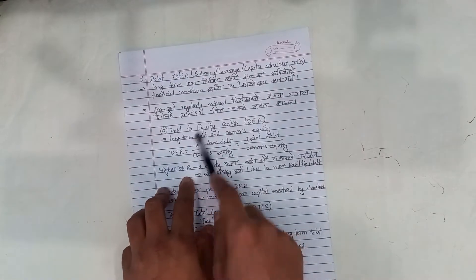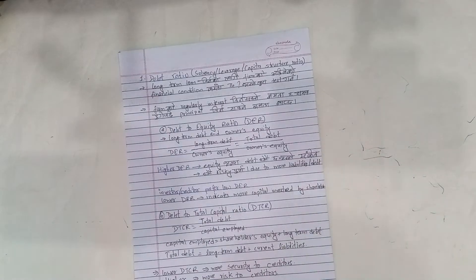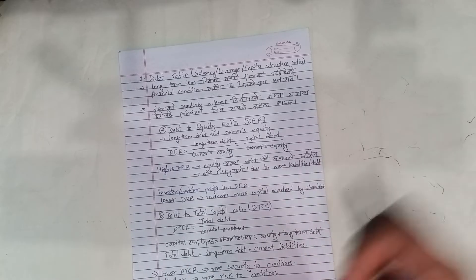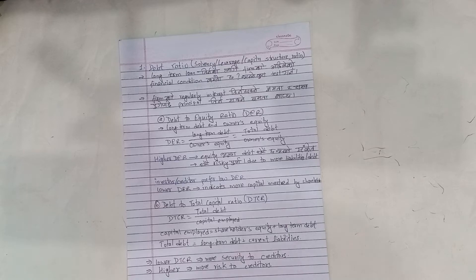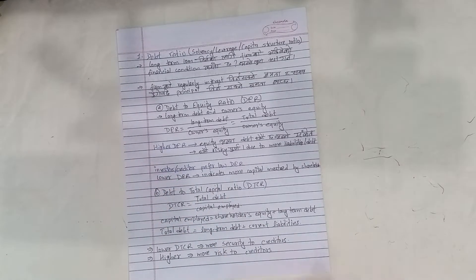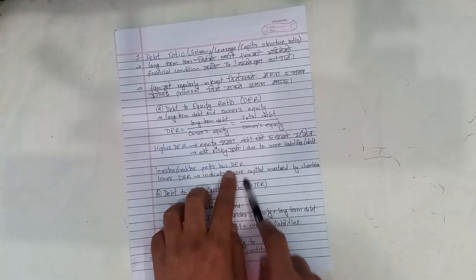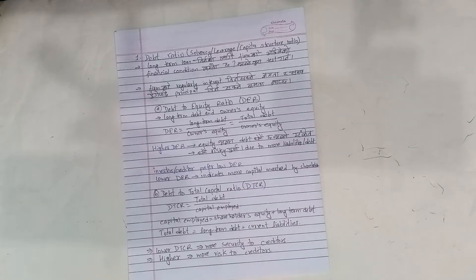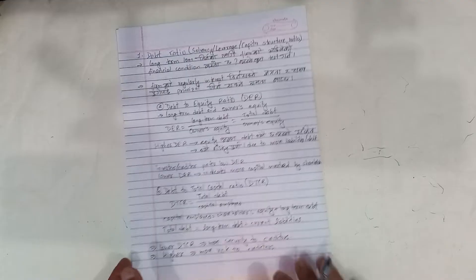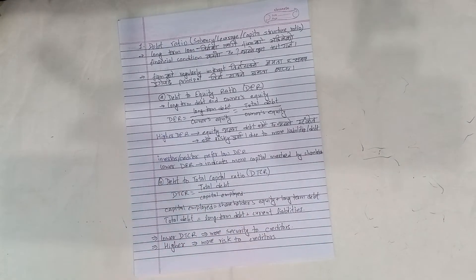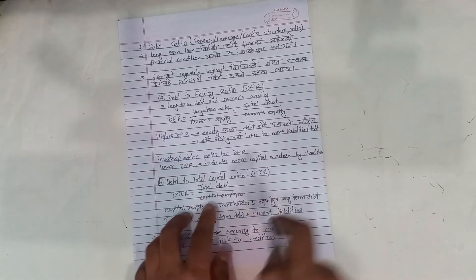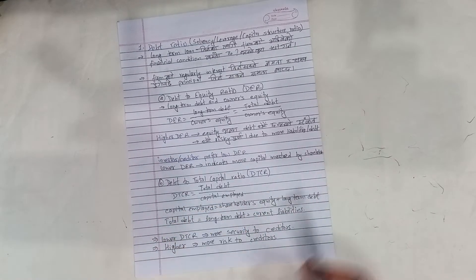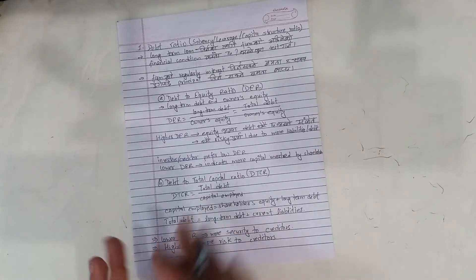A higher debt-to-equity ratio indicates higher gain but also more risk. A lower debt-to-equity ratio means more capital is invested by shareholders. We also look at the debt-to-total capital ratio: total debt divided by capital employed, where capital employed includes shareholder's equity, long-term debt, and capital structure financing.